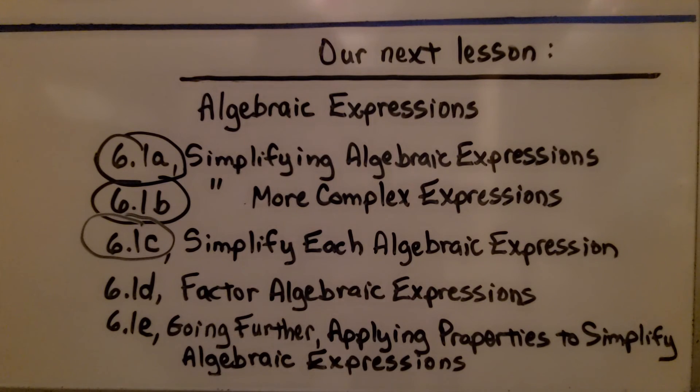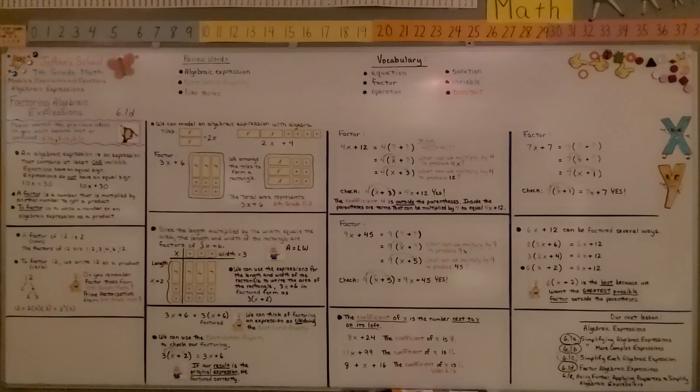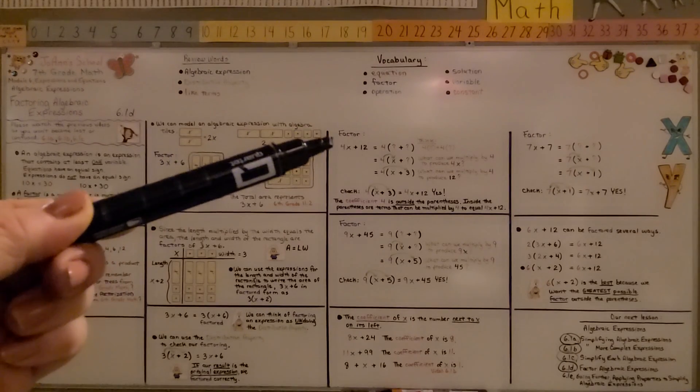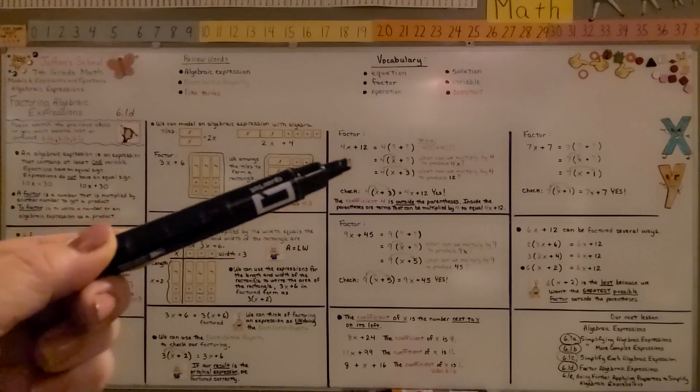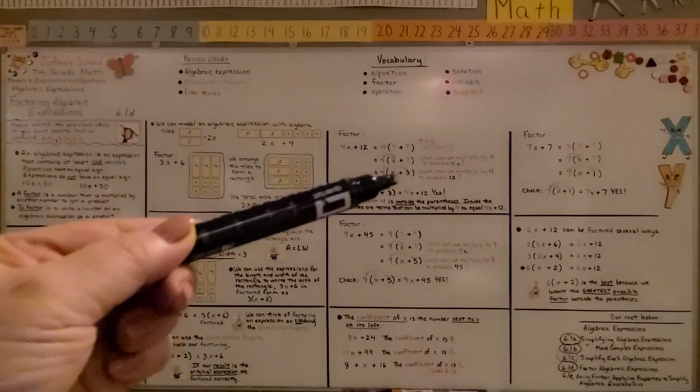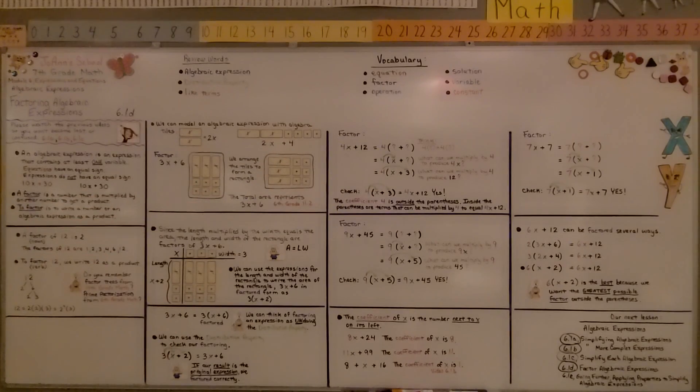I hope all this made sense to you. We're finished with this lesson and we're going to move on to the going further lesson at the back of 6.1—applying properties to simplify algebraic expressions. To factor a simple expression, we just put the coefficient on the outside and figure out what we would need to multiply it by to have the original expression inside the parentheses. Have a great day. As always, join me for the last part of the lesson. Bye!